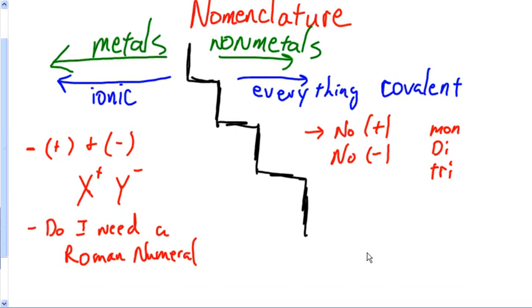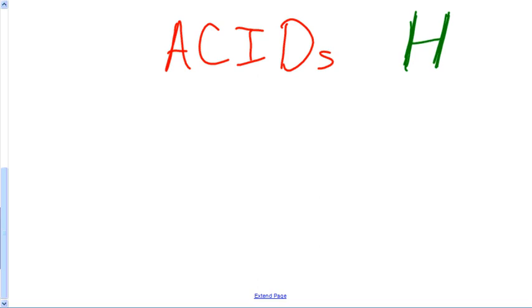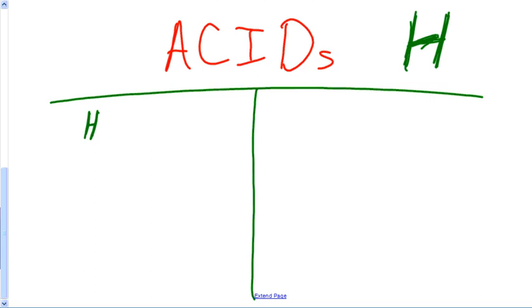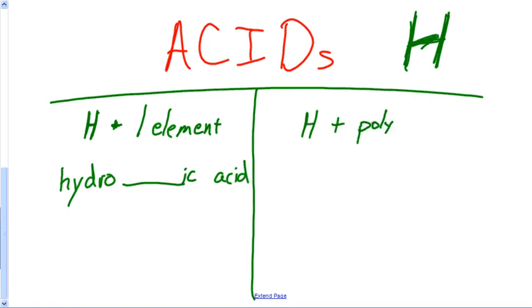One more time, what about the acids? How are we going to tell that we've got an acid? We've already said it: it starts with an H. So if I see an H, I'm going to be like, hey, this is an acid. There are two types of acids, so I will break this up into two parts. There's one type of acid that is H plus just one element. That's one type: binary acid. Those are the easiest because those always go hydro-something-ic acid. Those are the easiest ones. I love those. The second is when you have H plus a polyatomic in there.